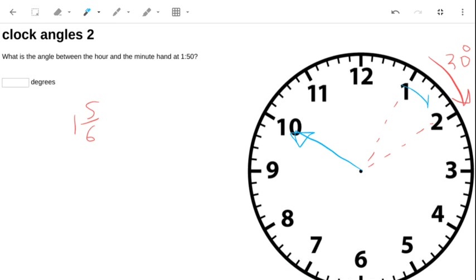So it will have moved... It's got a long hour hand there. It would have moved 25 degrees around. It's nearly at the 2. 5/6ths of 30 is 25.